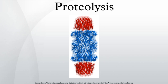Proteases may have one or more regulatory domains. Calcium-binding domain, for example: prothrombin, factor IX, X, VII, and protein C in the blood clotting cascade, and calpain. Kringle domain, for example in prothrombin, keeps the protease inactive.